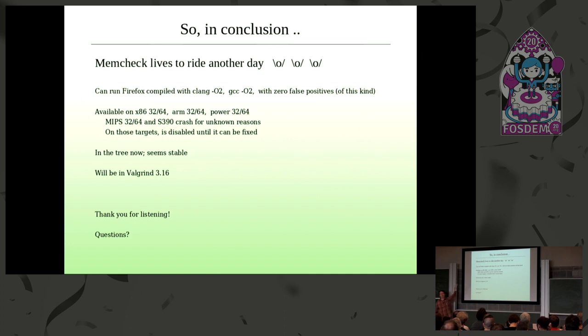And we get zero false positives, at least of this kind. There are still false positives when you pass undefined memory to system calls. But that's a different problem. And because it's all done at the IR level, it's basically naturally available for all architectures that Valprin supports. Except, unfortunately, S390 is crashing. So I need to talk to you about this for reasons I couldn't figure out. And also MIPS is crashing. So I've disabled it in the tree for now. We can just turn it back on. It's a little if-def. I don't know. I don't think we have a MIPS maintainer in the room, right? No. Oh, good. It's in the tree now. Seems to work. And we have to ship it in 3.16, which will happen as soon as I get my act together.